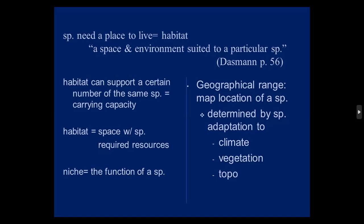Geographical range is a map location of a species, determined by its adaptation to where it can live — the climate, vegetation, and topography. For example, the long-tailed chinchillas cannot live above about 3,000 meters. They live in a semi-desert Mediterranean climate — it's hot. They've evolved longer tails and bigger ears to increase their ability to disperse heat. Whereas the short-tailed chinchillas have shorter tails and shorter ears — living higher up, they conserve more heat.